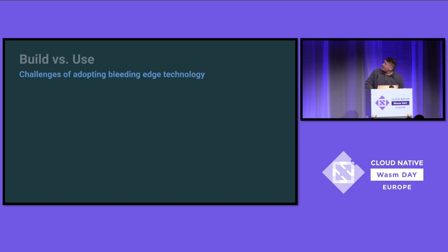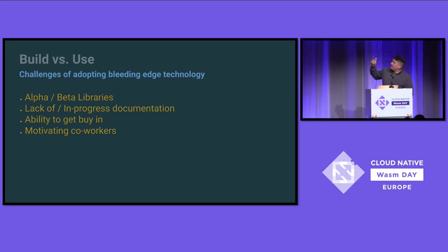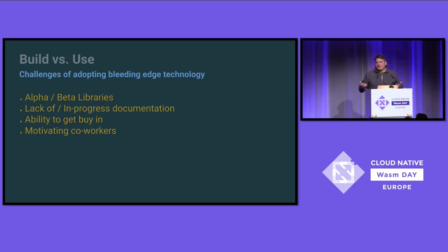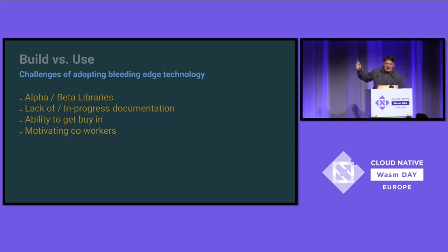Some of the challenges I've met trying to introduce this new technology — and we've all been there — are alpha and beta libraries at that level: they break. That's what we expect. However, it's really hard to get buy-in from leadership when I said, 'Hey, this is worth my time, pay my salary, I promise you we'll get something on this' — and then it breaks.